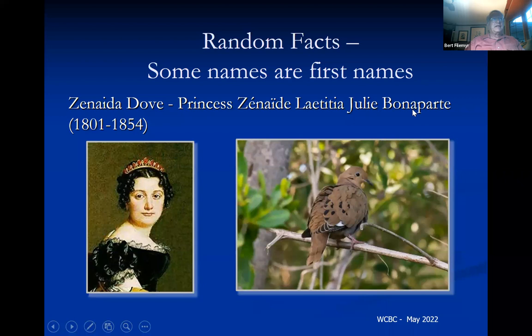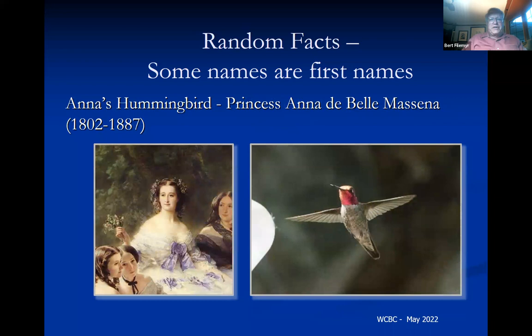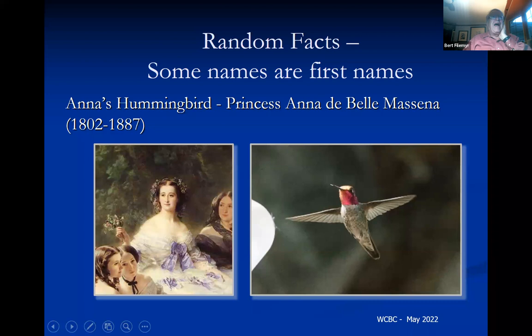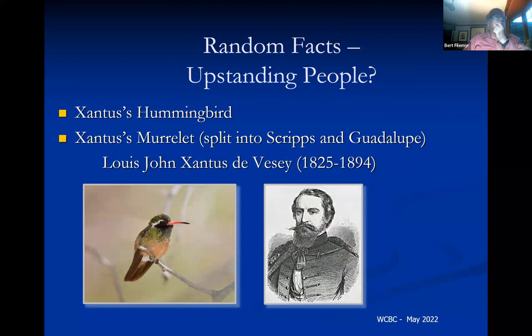Zenaida Dove is named for Princess Zénaïde Julia Bonaparte — her first name. Anna's Hummingbird is named for Princess Anna de Belle Masséna, wife of Rivoli. We don't know who discovered the species — Rivoli, being a general, was able to acquire a tremendous collection of hummingbirds shipped from the United States. Someone later went through the collection, found an unidentified specimen, and named it for his wife. That's the origin of Anna's Hummingbird.